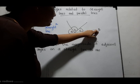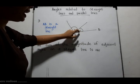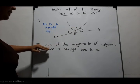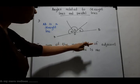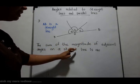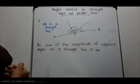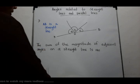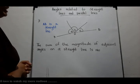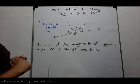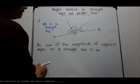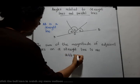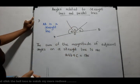Here, AOB is a straight line. These three angles A, B, C are adjacent angles. The theorem is: the sum of the magnitude of adjacent angles on a straight line is 180 degrees, or equivalently, 2 right angles, since one right angle is 90 degrees. We can write this as A plus B plus C equals 180 degrees.